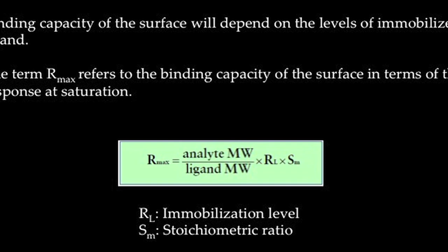The binding capacity of the chip surface will depend on the levels of immobilized ligand. The term maximum response, referred to as Rmax, is described as the binding capacity of the surface in terms of the response at saturation. A theoretical Rmax value can be calculated using the formula shown below, where RL is the immobilization level and SM is the stoichiometric ratio. A theoretical calculated Rmax is often higher than the experimentally derived Rmax for the same interaction. This could be because of several reasons such as the ligand is not fully active or that there is steric hindrance in the interaction. Different applications may require different binding capacities and thus different immobilization levels.